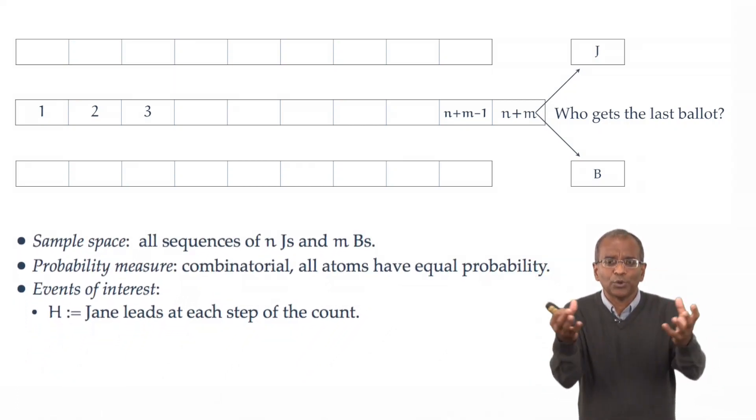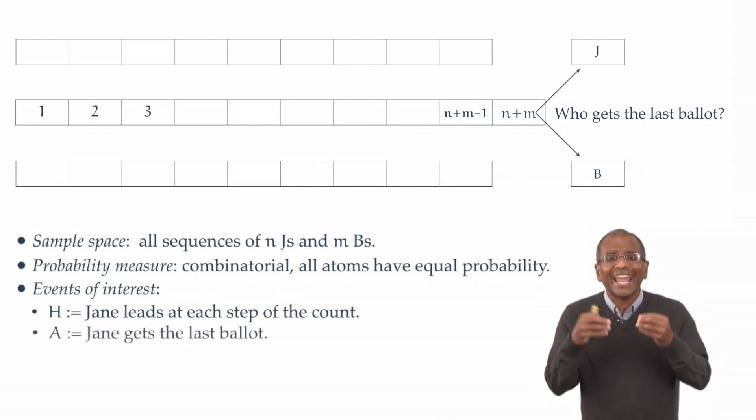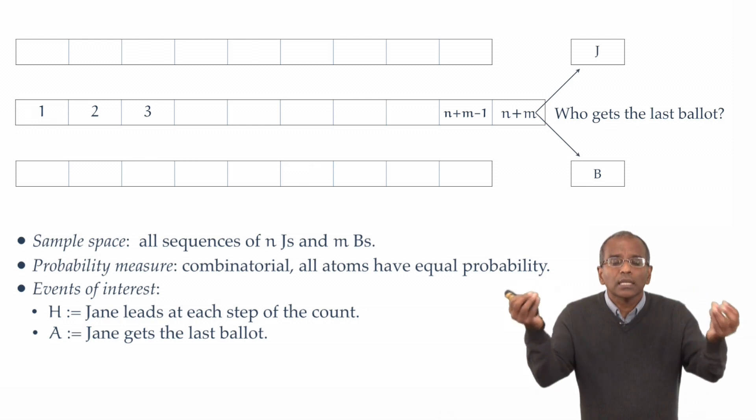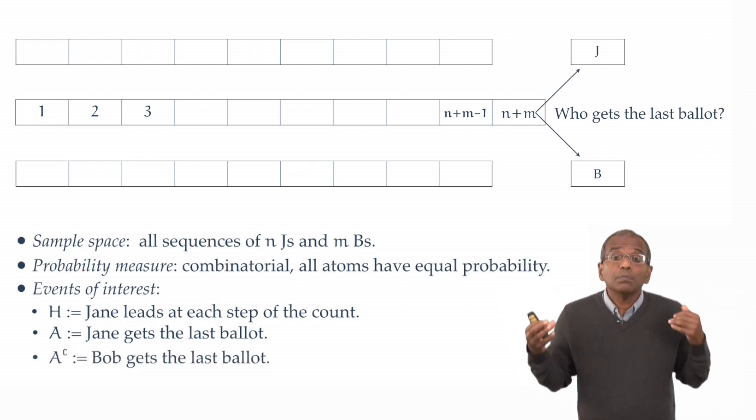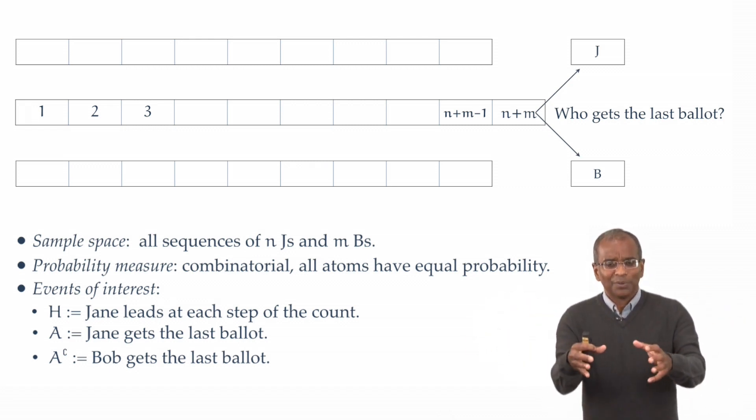Let us introduce some notation now. Using the notation we have been using throughout this tableau, let A denote this side information, ancillary information about the game. Let A denote the event that Jane acquires the last ballot. The complement of A, then, of course, is the event that Bob gets the last ballot.